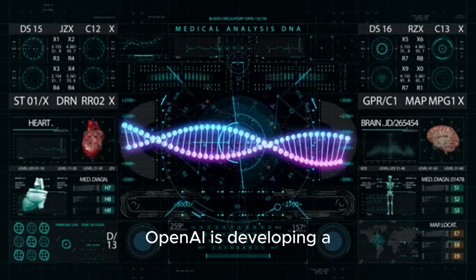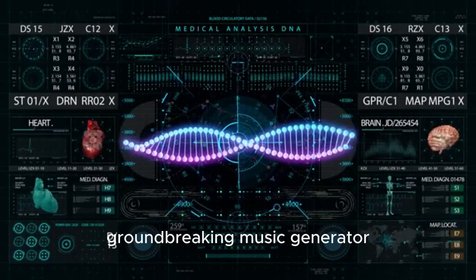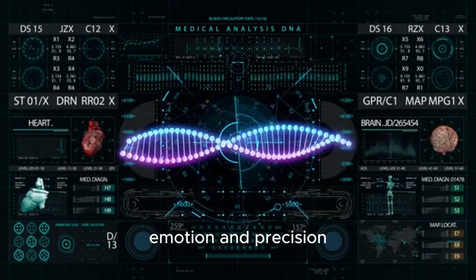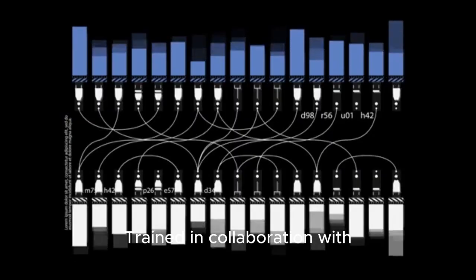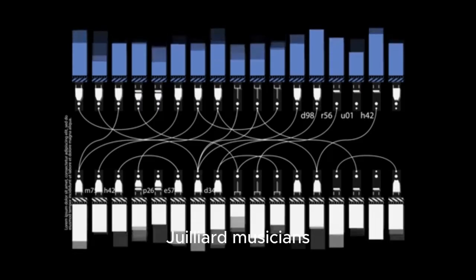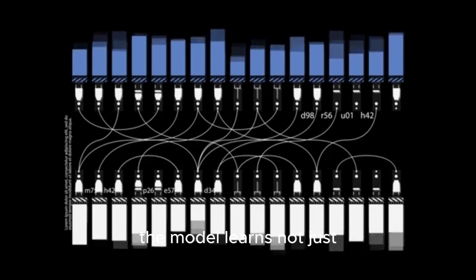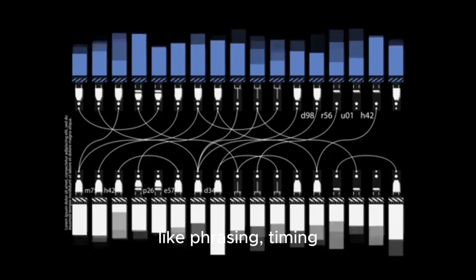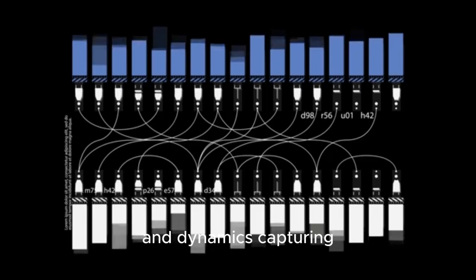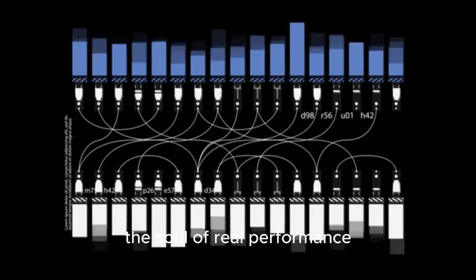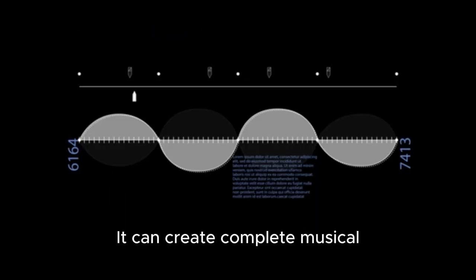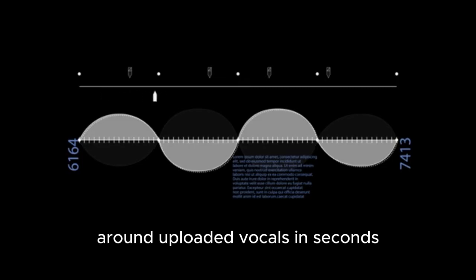OpenAI is developing a groundbreaking music generator that composes with human-like emotion and precision. Trained in collaboration with Juilliard musicians, the model learns not just notes but expressive elements like phrasing, timing, and dynamics, capturing the soul of real performance. It can create complete musical compositions from text prompts such as melancholic piano over soft rain, or even build accompaniment around uploaded vocals in seconds.